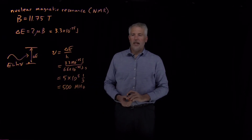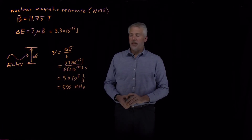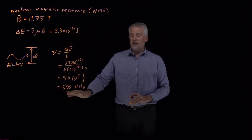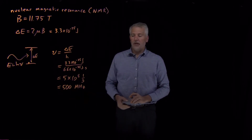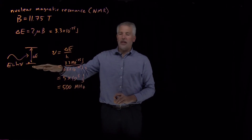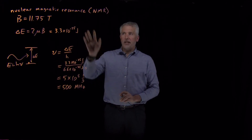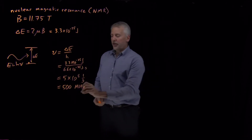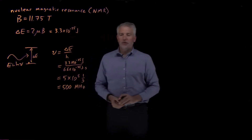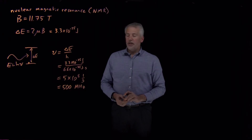Converting to hertz, that's 500 times 10 to the 6th hertz, or 500 megahertz. So when we say a particular NMR instrument is a 500 megahertz NMR machine, that means photons of frequency 500 megahertz have the proper energy to excite protons in the magnetic field of the magnet inside that NMR. 500 megahertz is fairly typical for a typical-strength magnet in an NMR instrument.